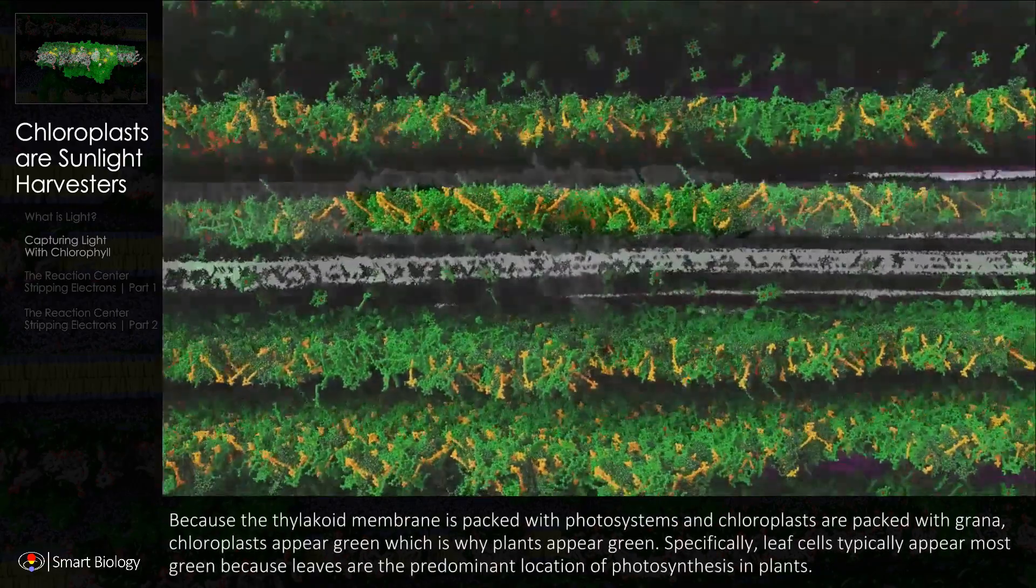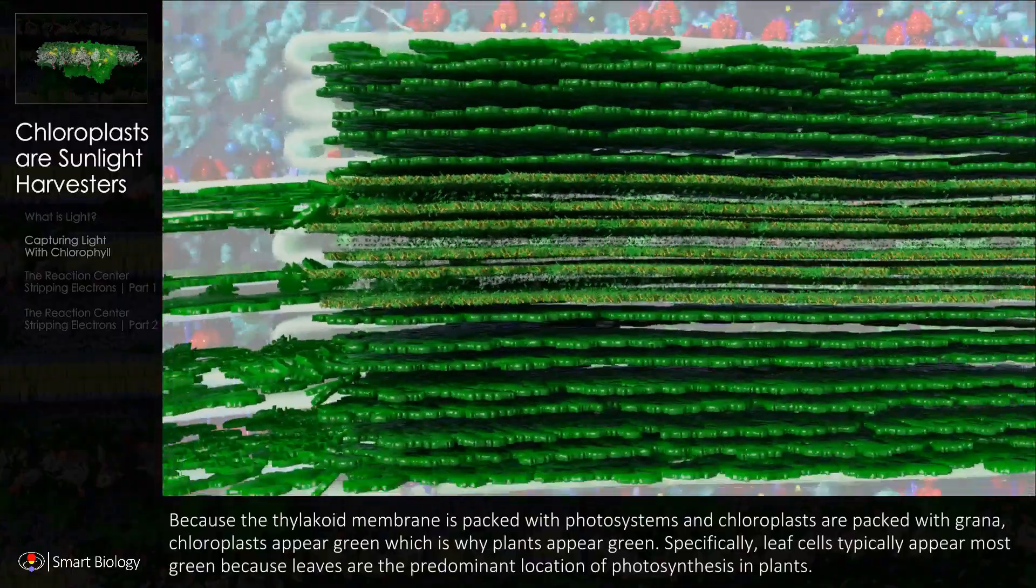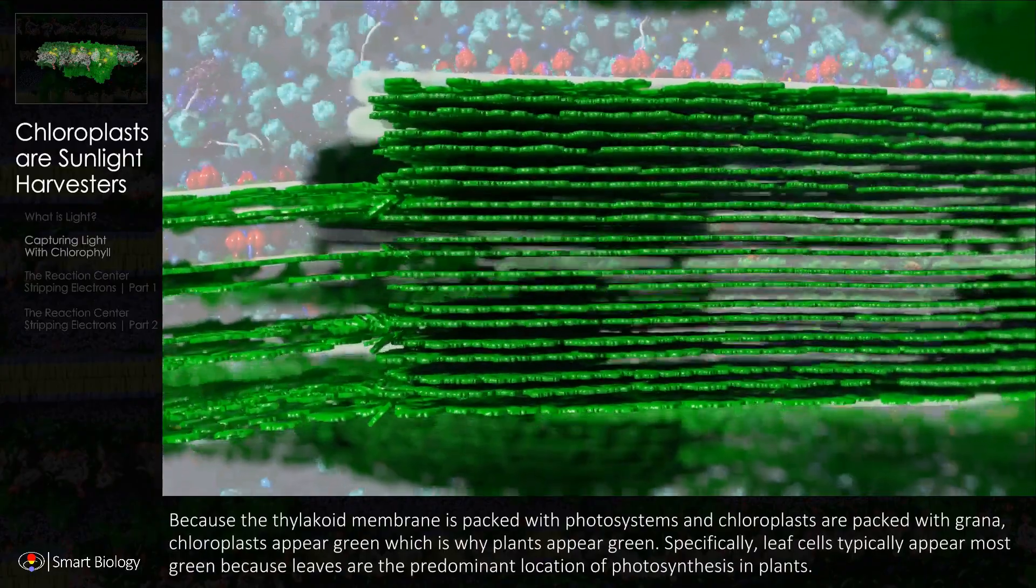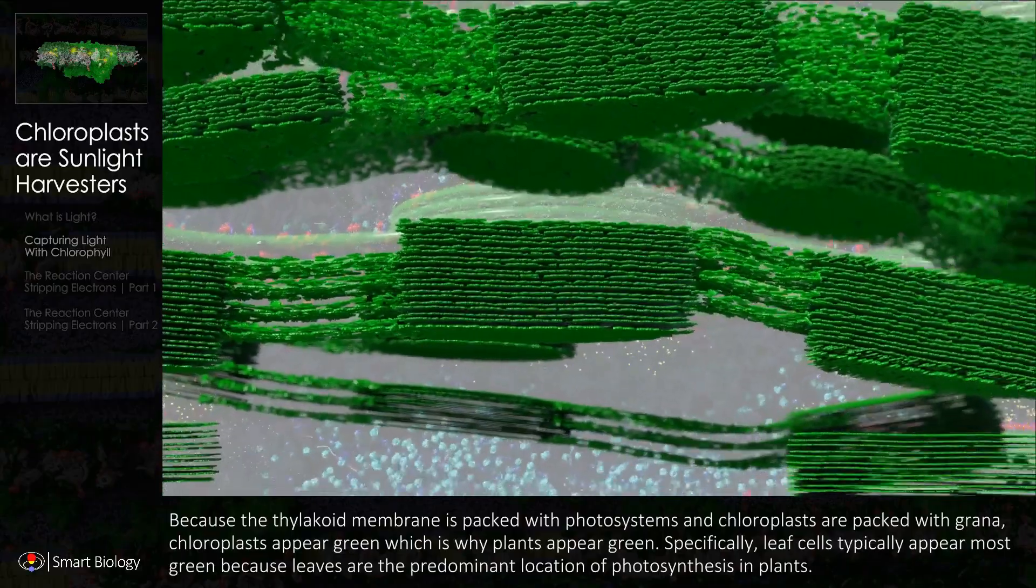Because the thylakoid membrane is packed with photosystems and chloroplasts are packed with grana, chloroplasts appear green.